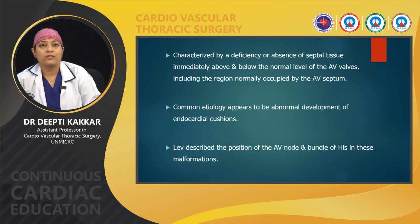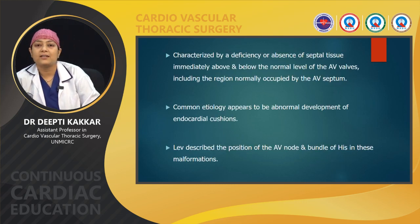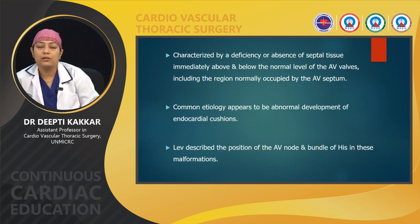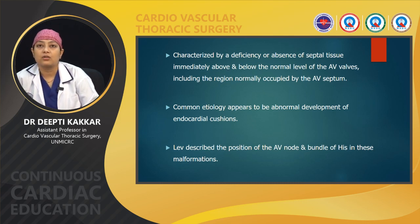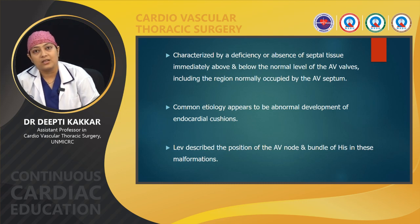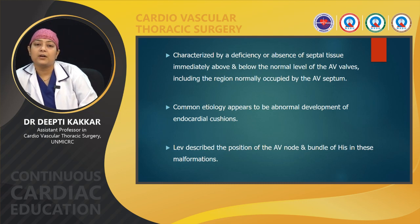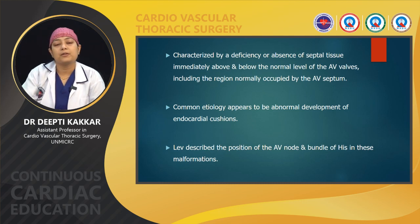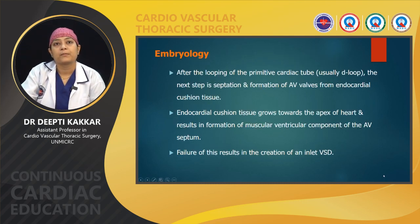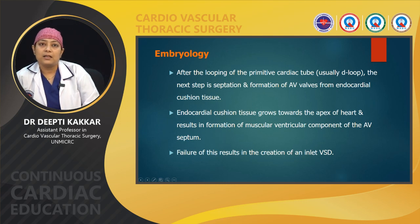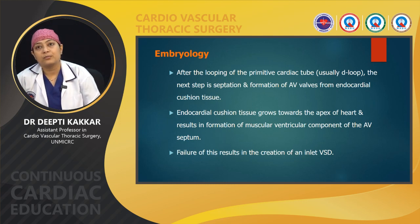An atrioventricular septal defect is characterized by deficiency or absence of septal tissue immediately above and below the normal level of AV valves. This includes the region normally occupied by the AV septum. The most common etiology appears to be the abnormal development of endocardial cushion tissues. The bundle of His and the position of AV node in these malformations was described by Lev.